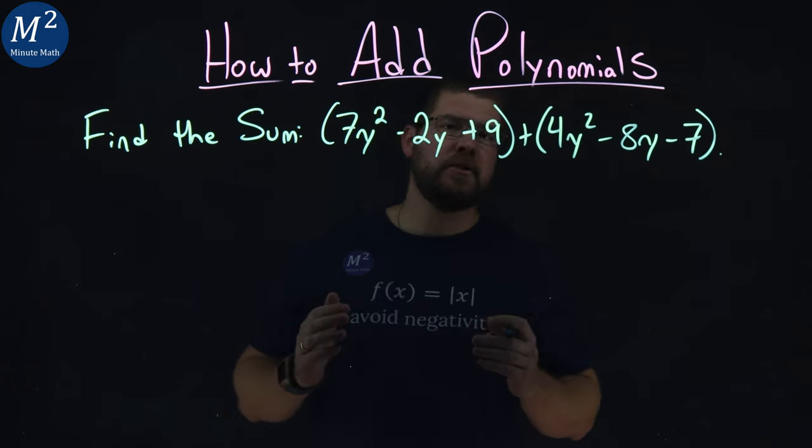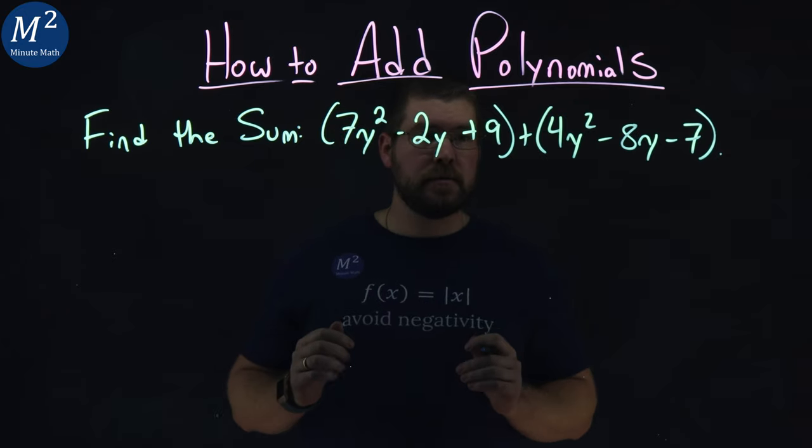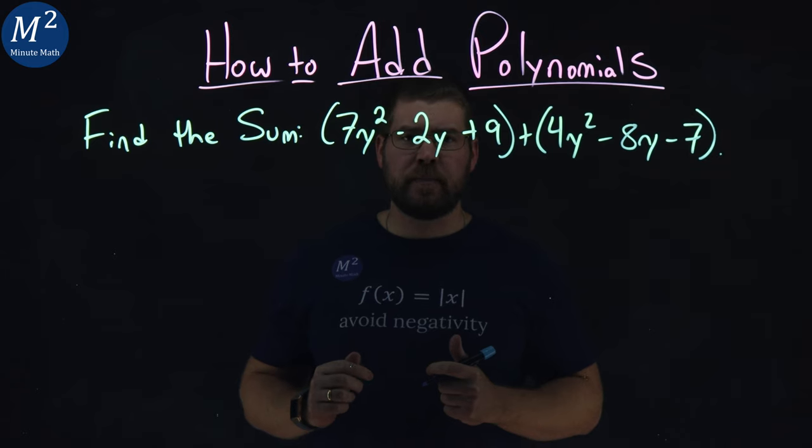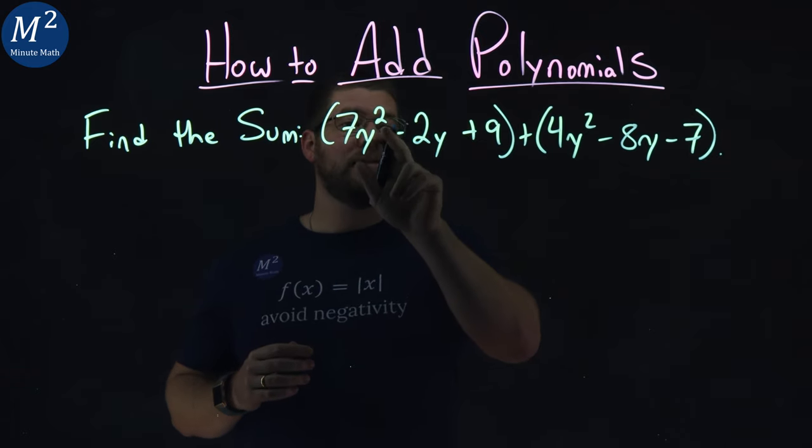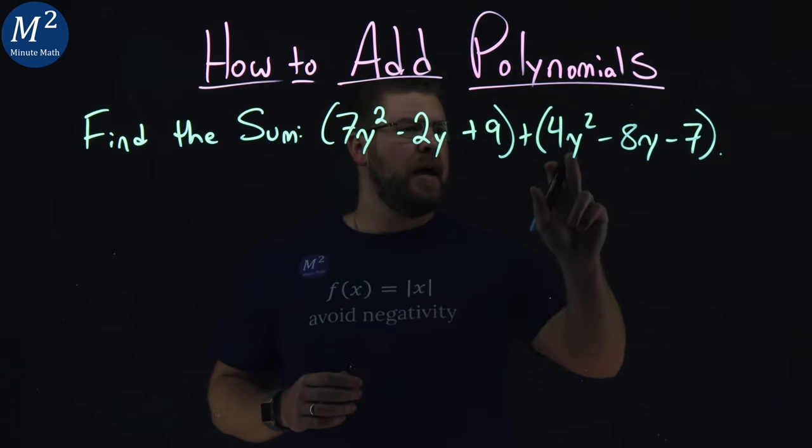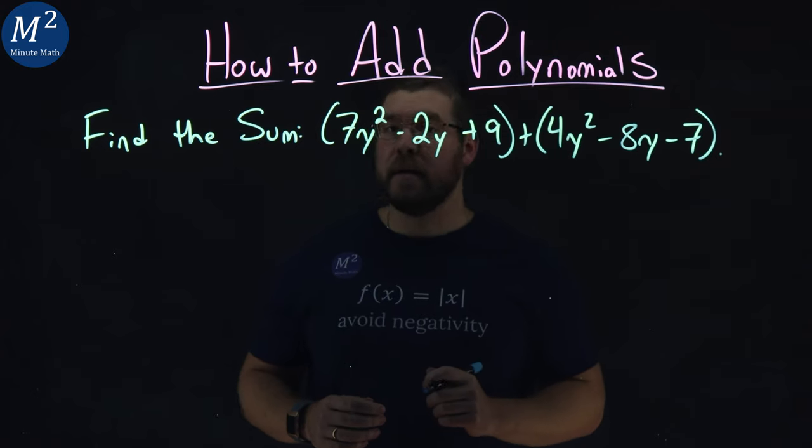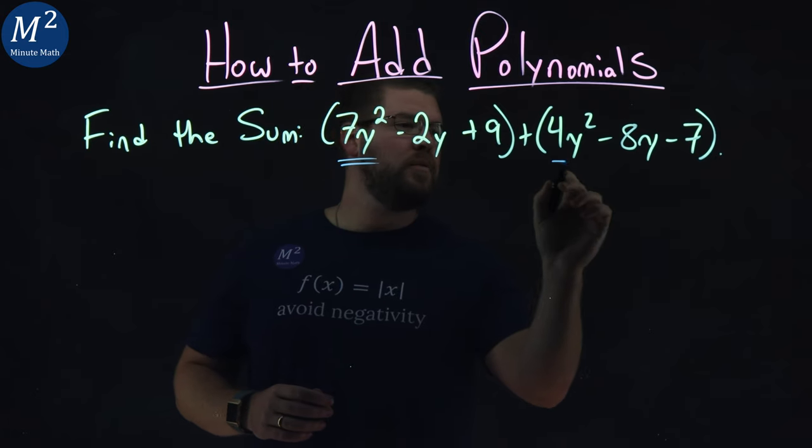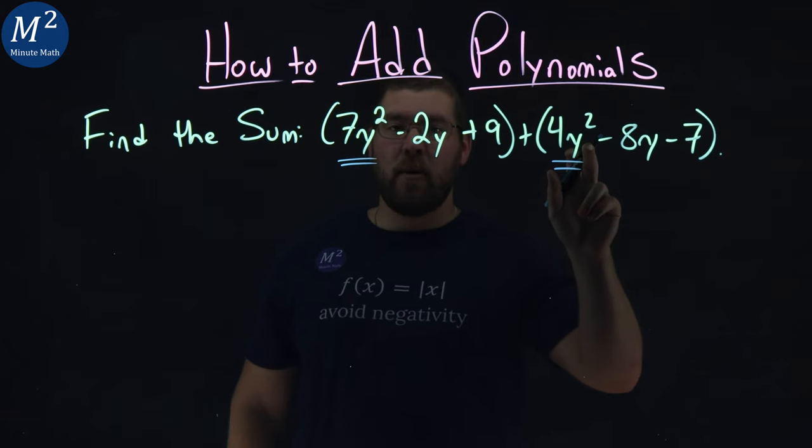What I first want to do is identify our like terms. Notice the only variable we have here is y. That's a good starting point. Now I have a 7y² and a 4y². I'm going to put two lines to identify the y² terms.